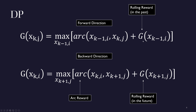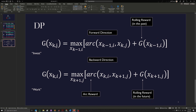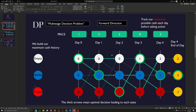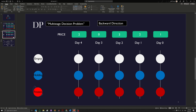This g represents the rolling reward in the past up to the state x of k-minus-one-i yesterday. So this is the forward direction. But this is not how normally people formulate dynamic programming. The backward direction is actually how people formulate dynamic programming recursive relations, which is the one below. I'm going to show you next how we could solve the same problem in the nominal representation of dynamic programming done in the backward direction.